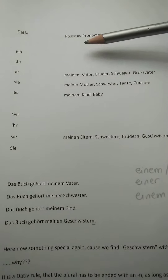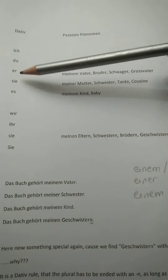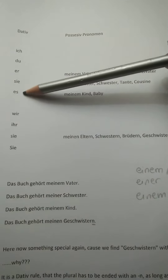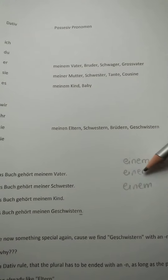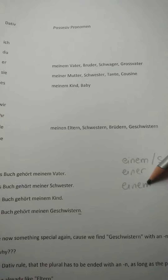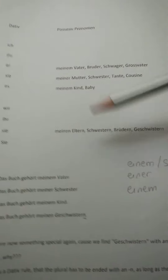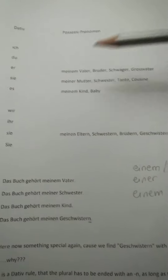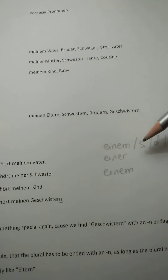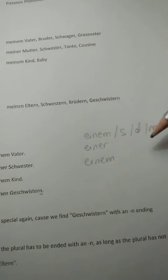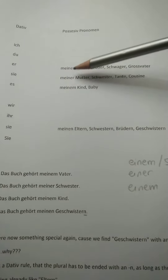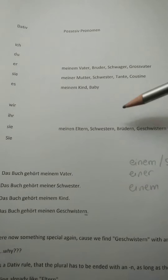Because you already know the dative: er, der, sie, die, es, das — which become einem, einer, einem, der, die, das. But now maybe you take meinem, or seinem, or deinem, or meinem — this is the easiest way to catch up.